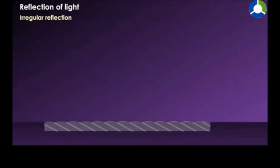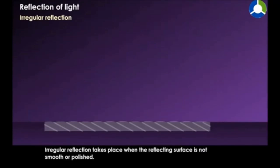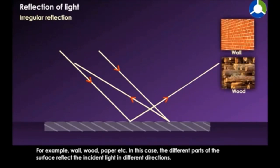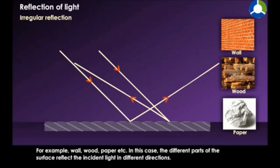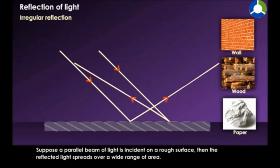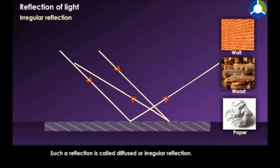Irregular reflection takes place when the reflecting surface is not smooth or polished — for example, a wall, wood, paper, etc. In this case, the different parts of the surface reflect the incident light in different directions. Suppose a parallel beam of light is incident on a rock surface; then the reflected light spreads over a wide range of area. Such a reflection is called diffused or irregular reflection.